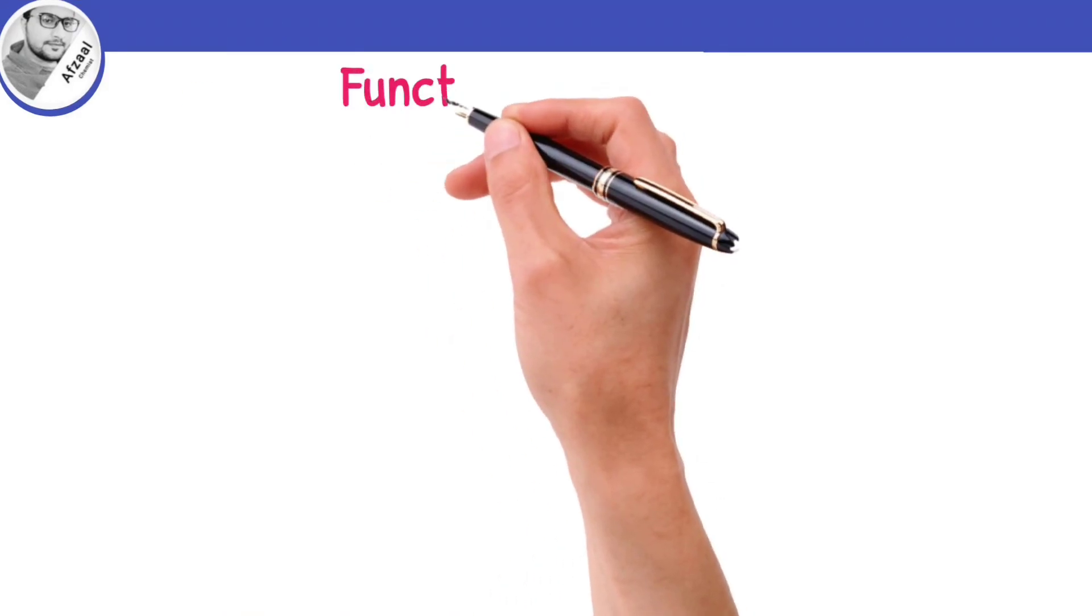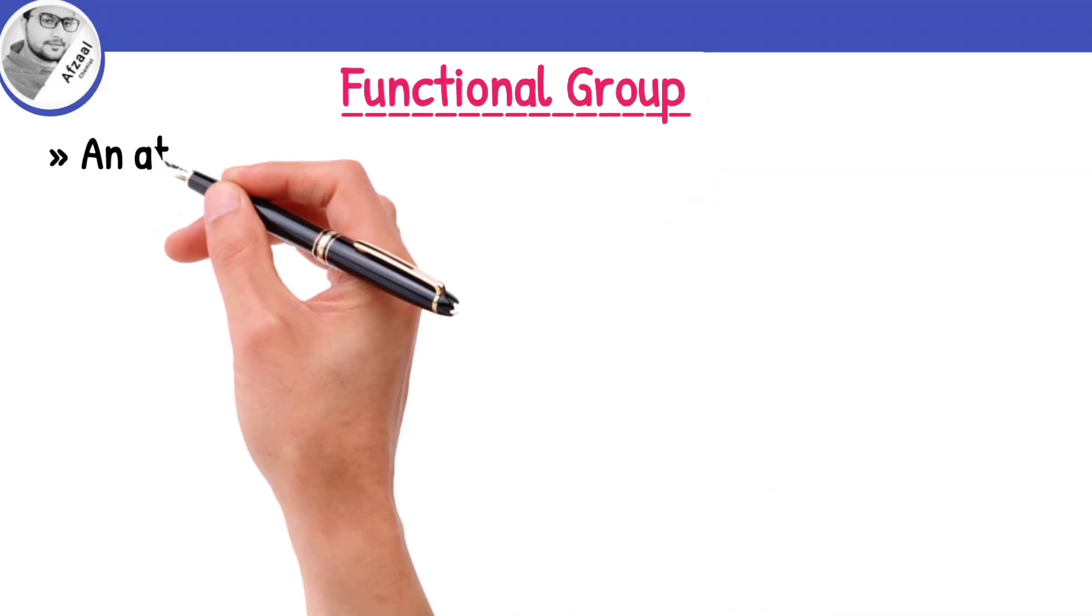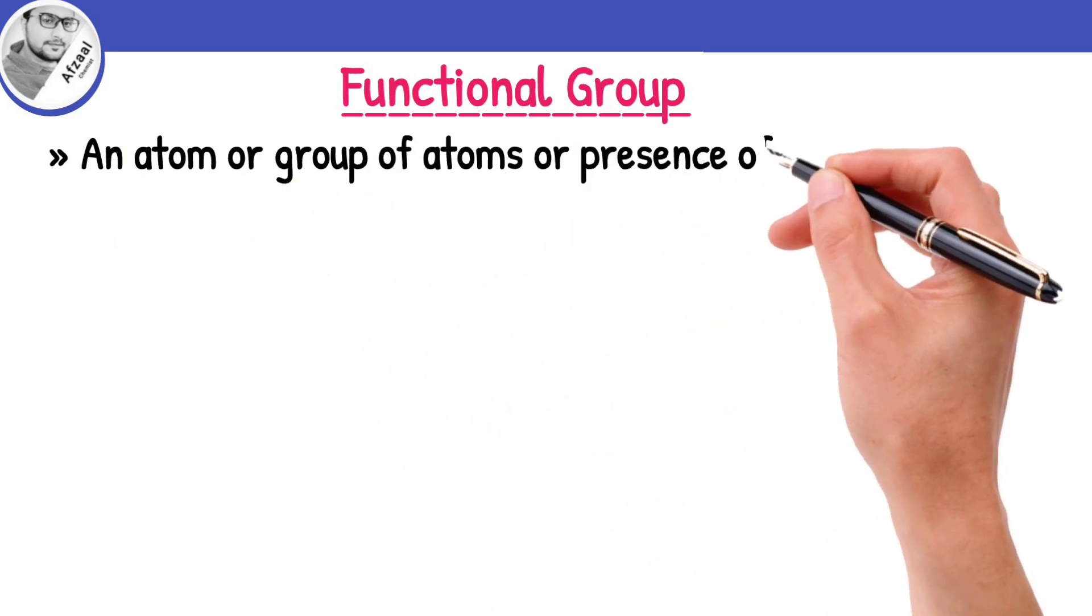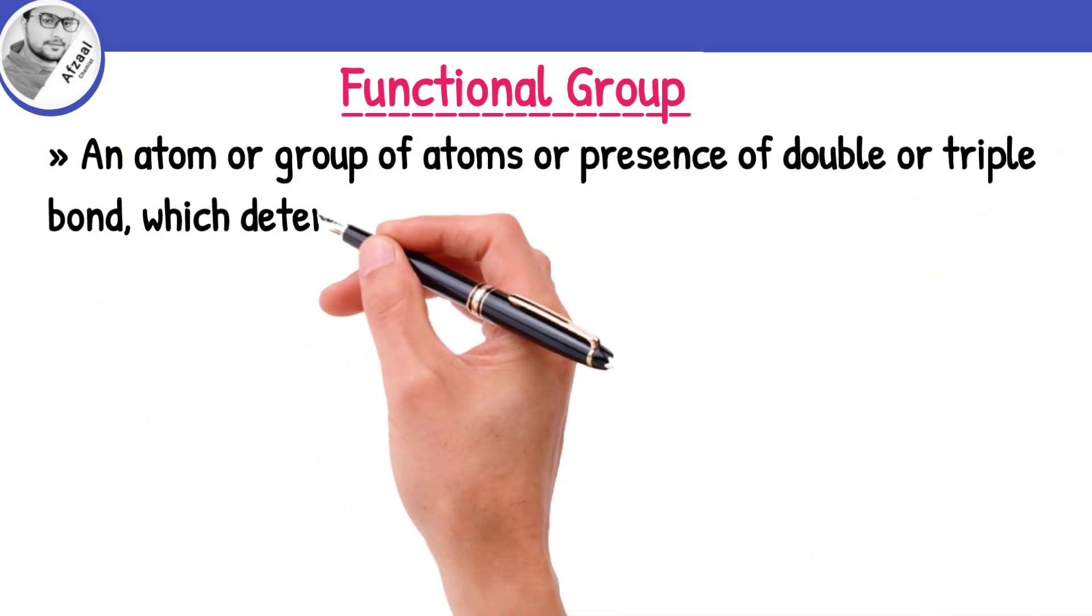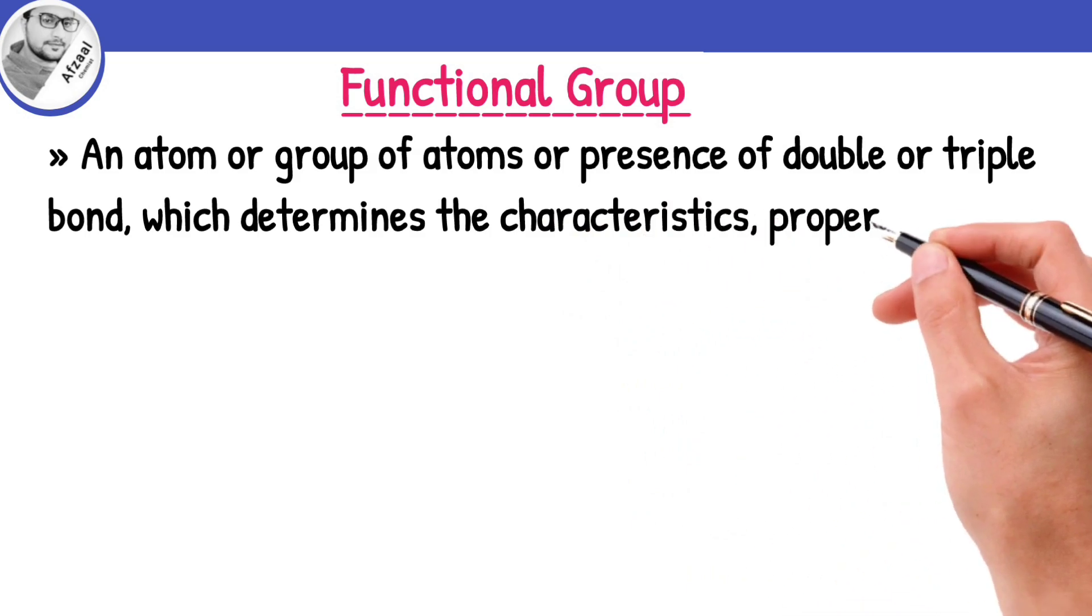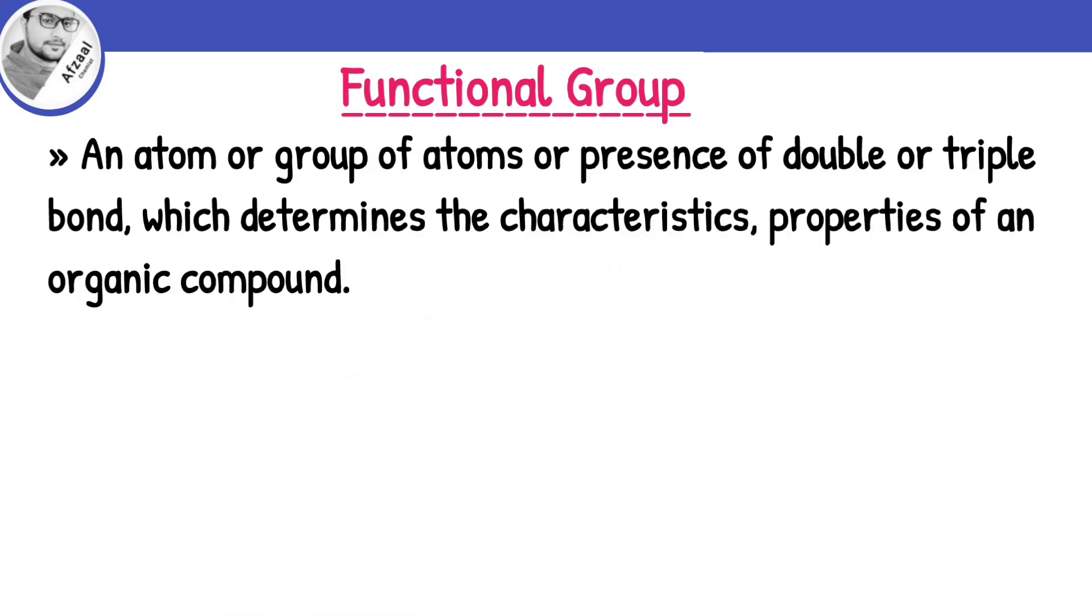Let me define functional group. An atom or group of atoms or presence of double or triple bond, which determines the characteristic properties of an organic compound, is known as the functional group.